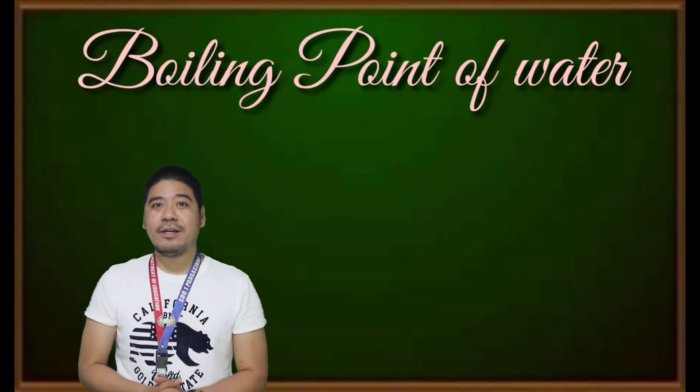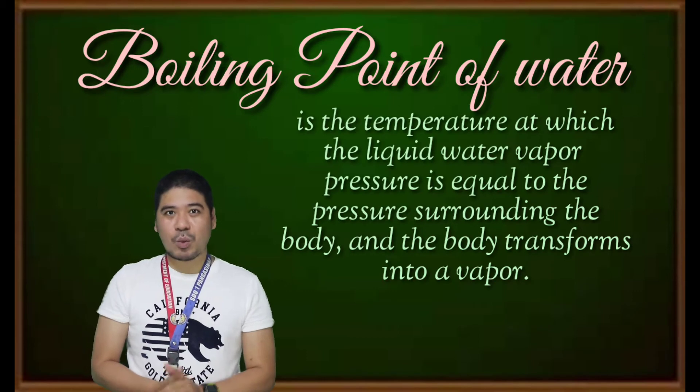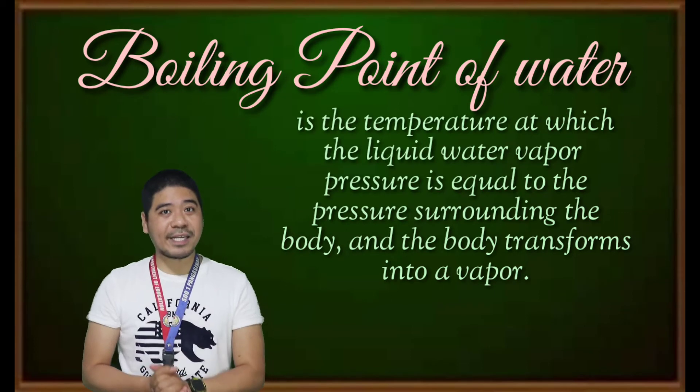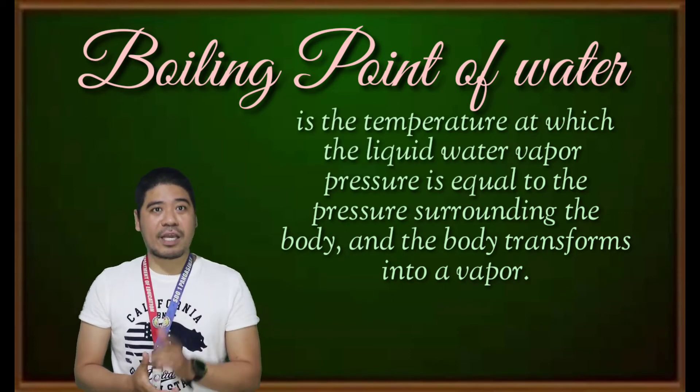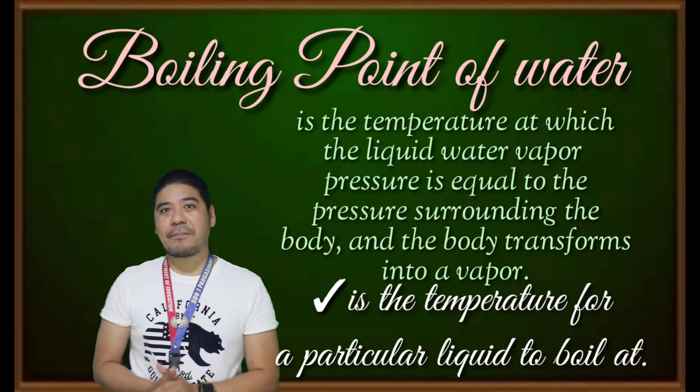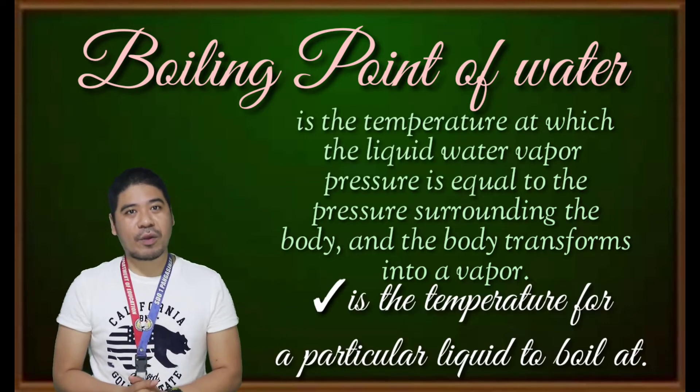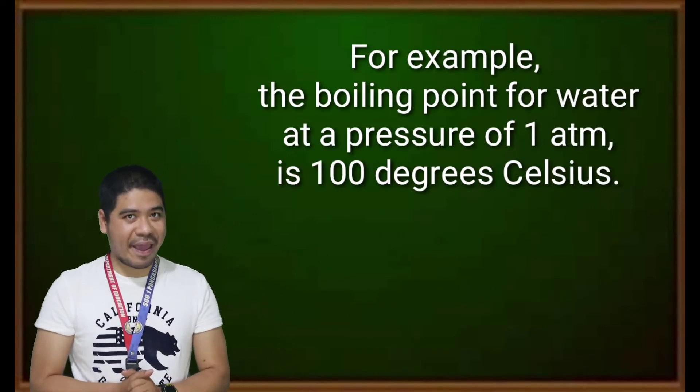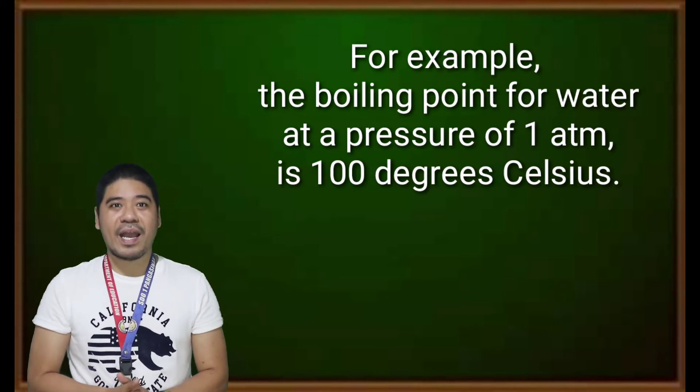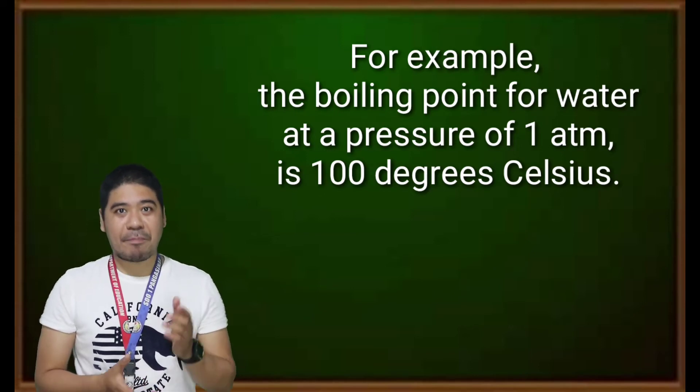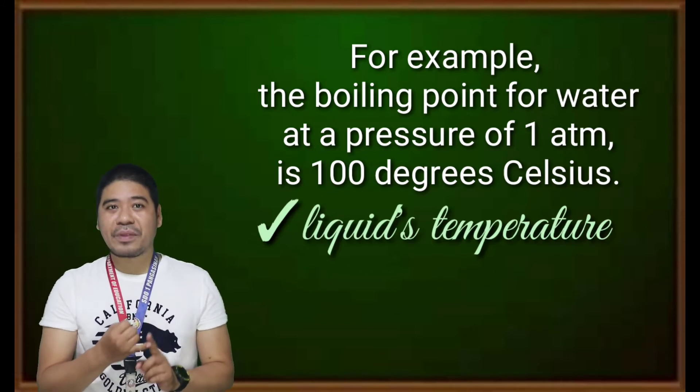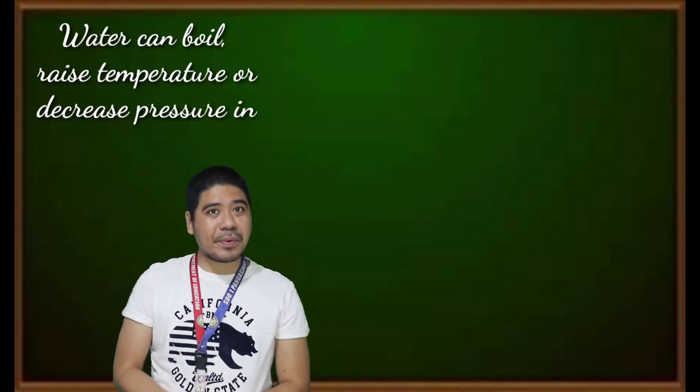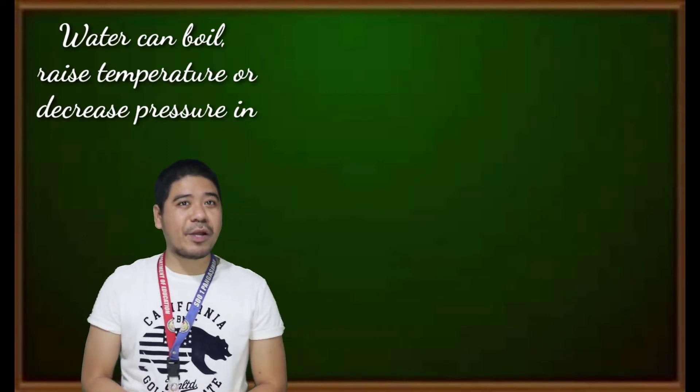The boiling point of water is the temperature at which the liquid water vapor pressure is equal to the pressure surrounding the body and the body transforms into a vapor. The boiling point is the temperature for a particular liquid to boil at. For example, the boiling point of water at a pressure of 1 atm is 100 degrees Celsius. A liquid's boiling point depends upon the liquid's temperature, atmospheric pressure, and vapor pressure. Water can boil by raising temperature or decreasing air pressure in two ways.